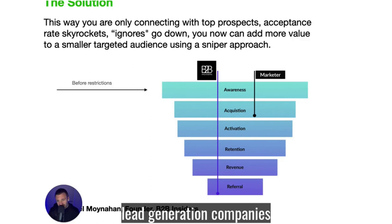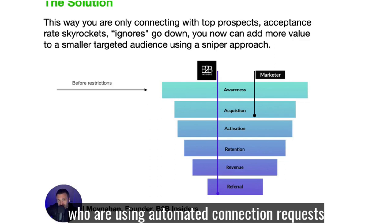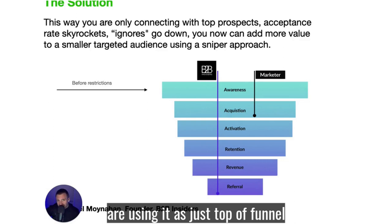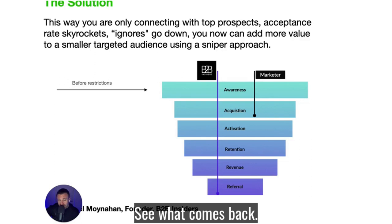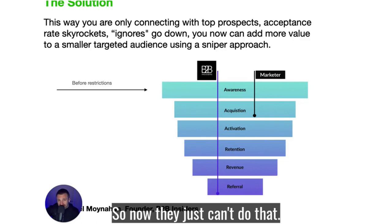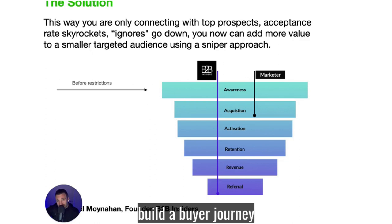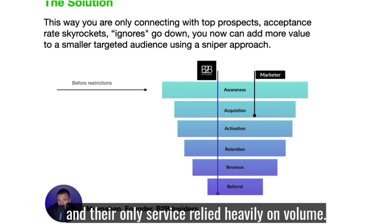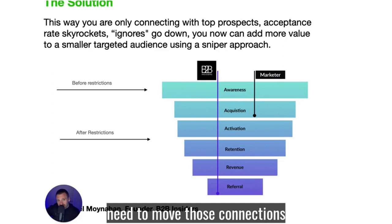Just to give you a visual — before the restrictions, lead generation companies and most marketing agencies using automated connection requests as a primary service were using it as top-of-funnel: spray and send out 300 connection requests a day, see what comes back. It hurts the client's brand reputation — there's a million things wrong with that. Now they just can't do that. You see all these companies scrambling because they don't understand how to properly build a buyer journey, and now they're stuck because their only service has been capped and it relied heavily on volume.